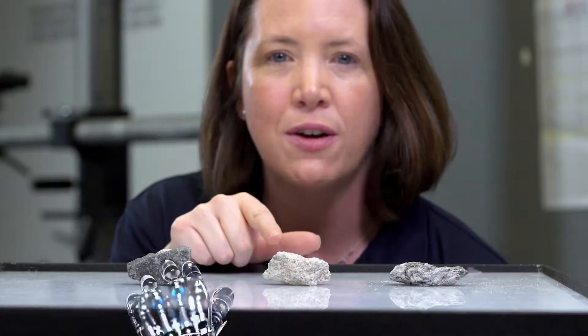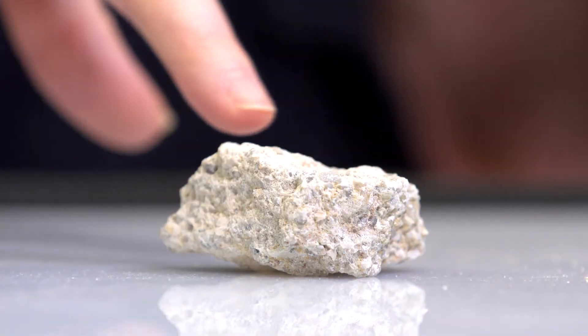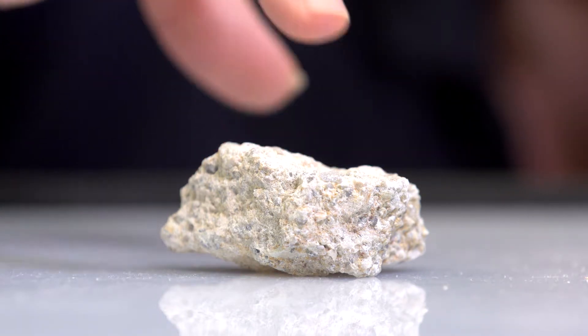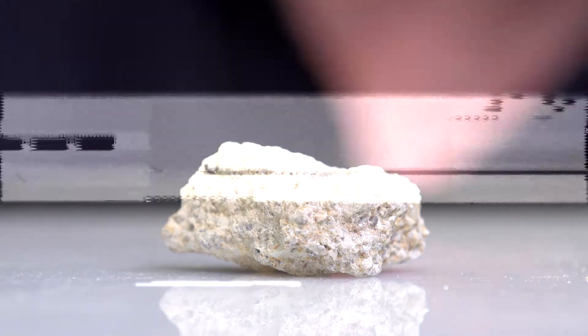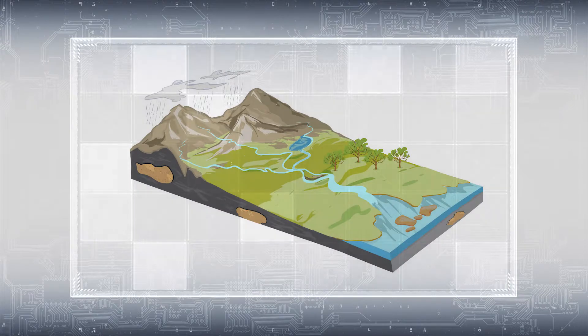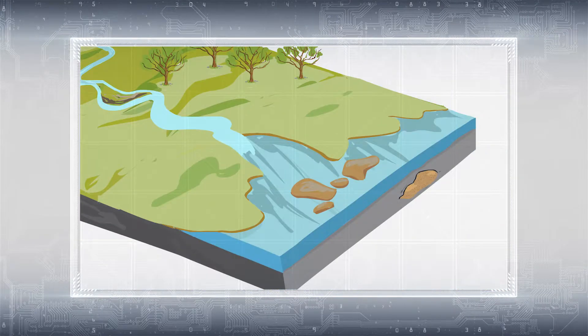Sedimentary rocks are the rocks that are formed on the earth's surface and they form as a result of physical processes that happen all around our earth, either through the erosion and weathering of existing rocks or through chemical processes that happen in the ocean.